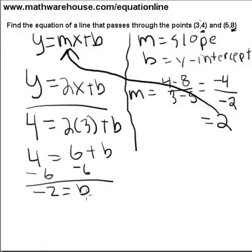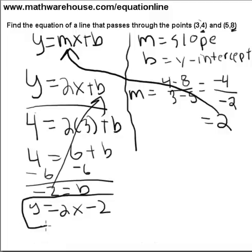4 equals 6 plus b. Okay. Now we have our y-intercept, or b. So we can put that into our equation. And we have the equation of a line that goes through both these points.